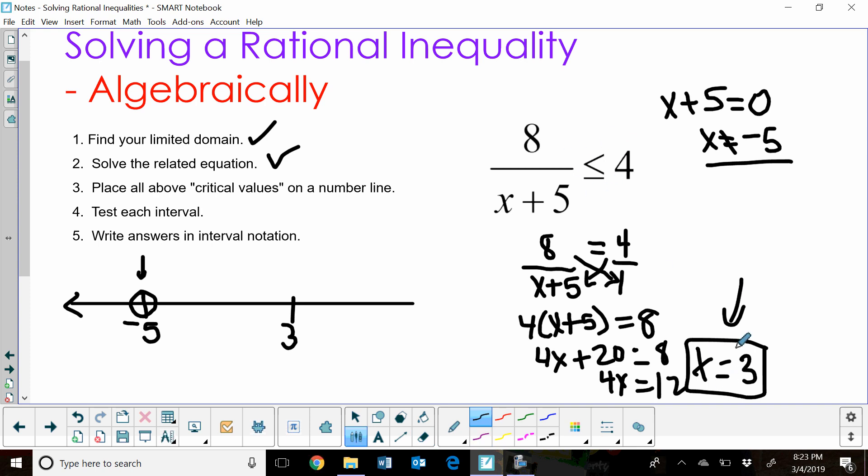So that means we are going to include our solution. So I'm going to include the 3. Just a real quick recap: if you have less than or equal to or greater than or equal to, you're going to include your solution. If you have a less than or a greater than, you do not include your solution. So you have an open circle on your number line.